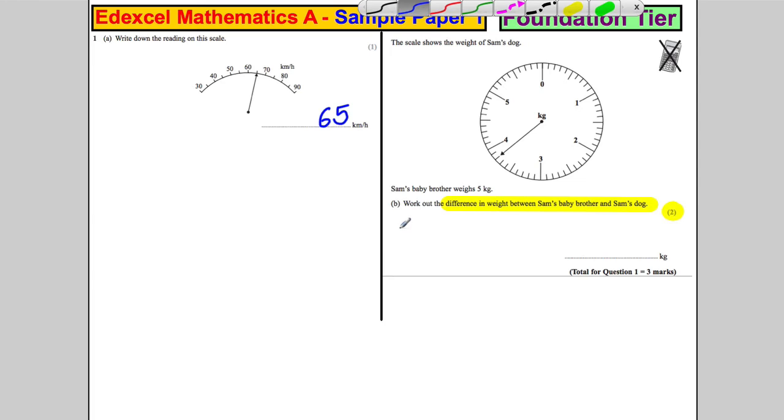Okay, let's say how much Sam's dog weighs. Sam's dog, looking at the scale above. Okay, we've got zero, one, two, three. So it's three, it's between three and four. And there's ten divisions.